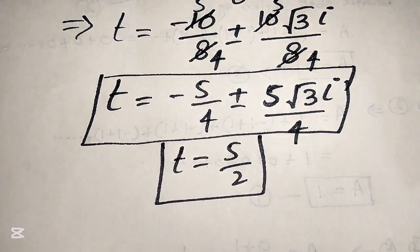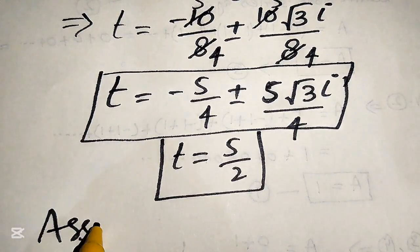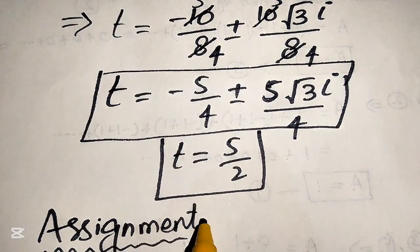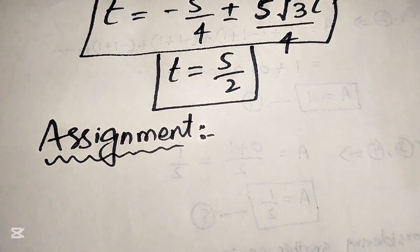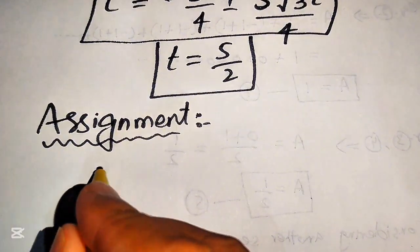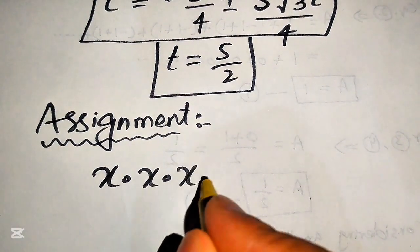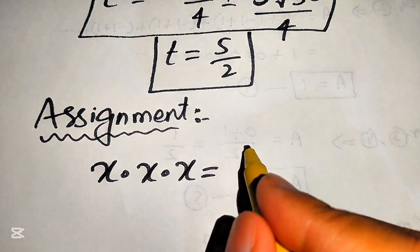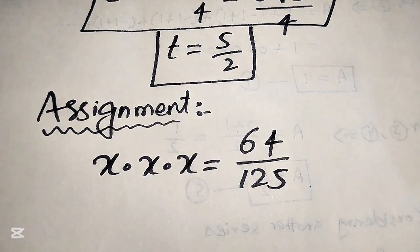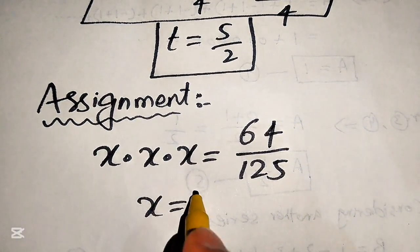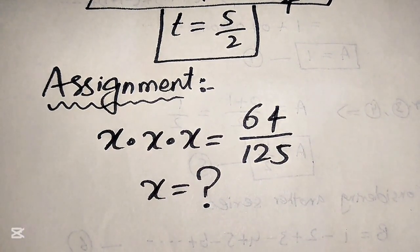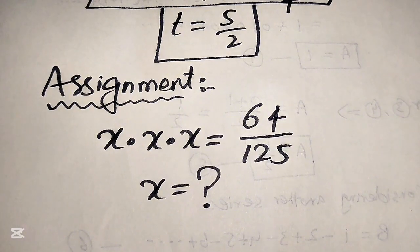This is our final answer. For your assignment, solve: x times x times x equals 64 divided by 125. Find all the values of x and write your answer in the comment section. Thank you so much for watching this video — please subscribe to my channel for more exciting videos.